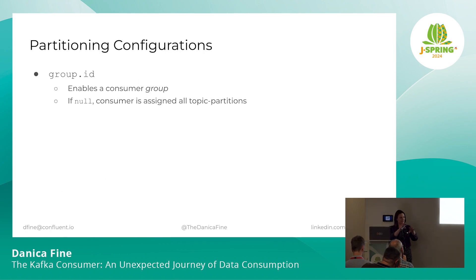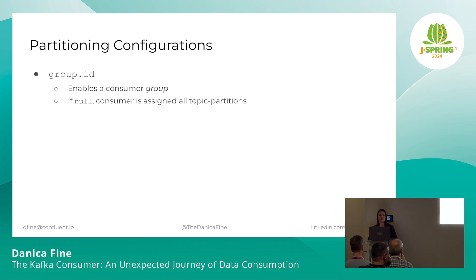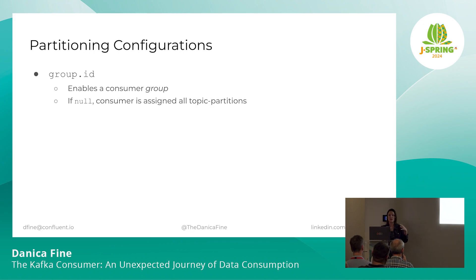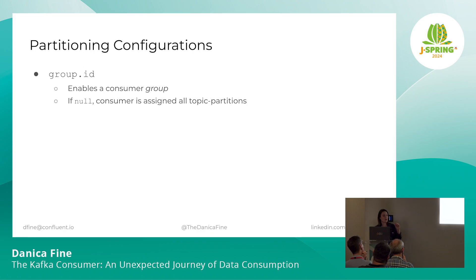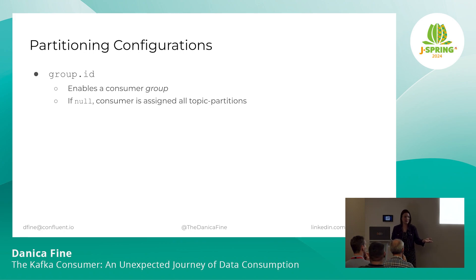The biggest configuration here is group ID. When you set up a consumer, you need to subscribe to some topics, but we're not always going to read from every partition in that topic, especially if our consumer is part of a consumer group. Being part of a consumer group means that we are able to band together a bunch of consumers to parallelize the processing of data from different partitions within a topic or set of topics. We do that by enabling a group ID — a string that you set to a consistent value across the consumers that you want to be in that same consumer group.